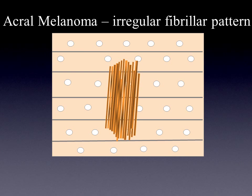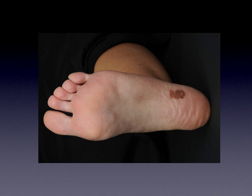The irregular fibrillar pattern is another pattern frequently found in acral melanomas. In this pattern, the lines crossing the furrows and ridges are irregularly pigmented and show a great variety in thickness. Here you see an example of a large macule on the sole where in dermoscopy this fibrillar pattern crosses in an irregular way the furrows and the ridges. At larger magnification you can see more clearly the irregularity in color and in the thickness of the fibrils.